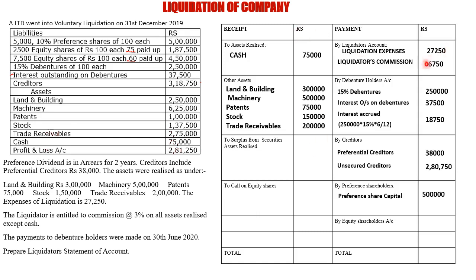Even after paying preference capital, sufficient funds remain. There is an adjustment that preference dividend is in arrears for 2 years. 10% of 5,00,000 equals 50,000 dividend per year. Arrears for 2 years: 50,000 × 2 = 1,00,000. We still have sufficient amount to clear the preference dividend, so we record arrears of dividend: 1,00,000.